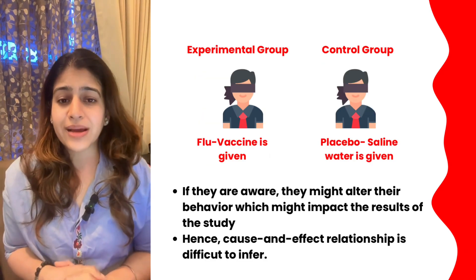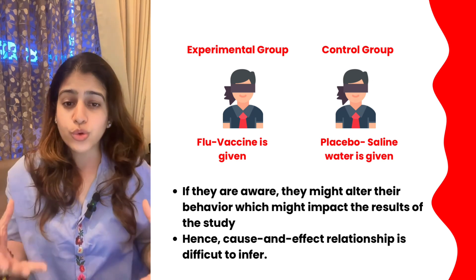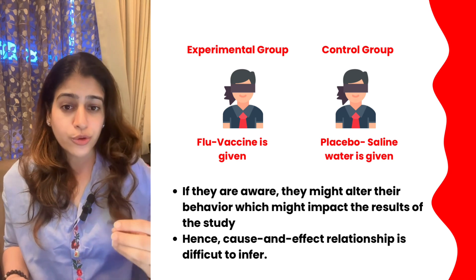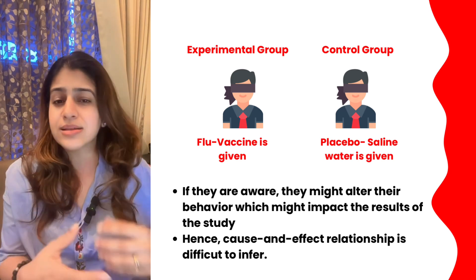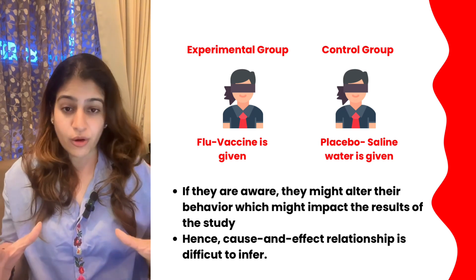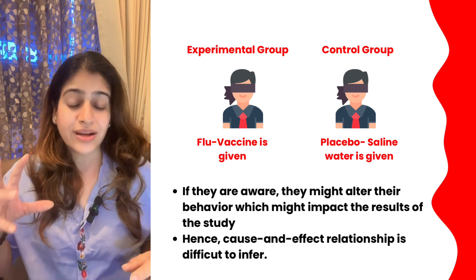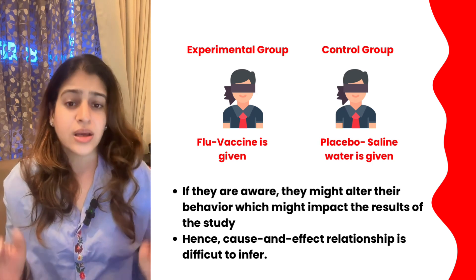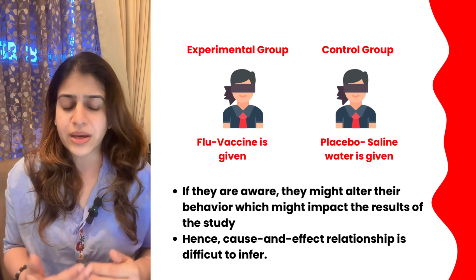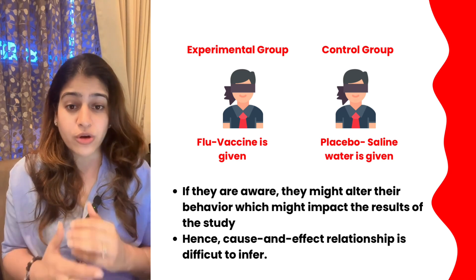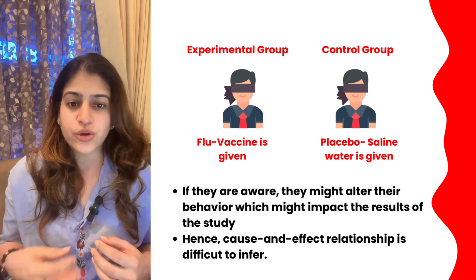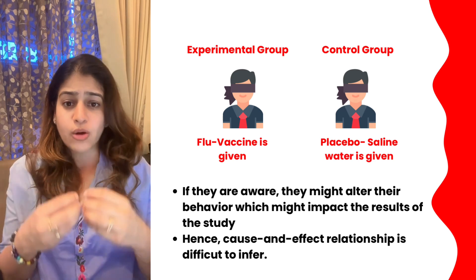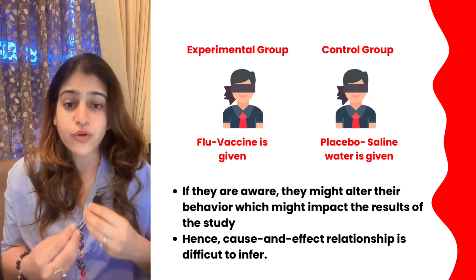Let's take an example of a single blind study. Say I'm a researcher with two groups: the experimental group receives a flu vaccine, and the control group receives saline water. If participants are aware of which group they're in, the control group — knowing they haven't received the vaccine — might get scared and start washing their hands regularly and taking extra precautionary measures, altering their natural behavior.